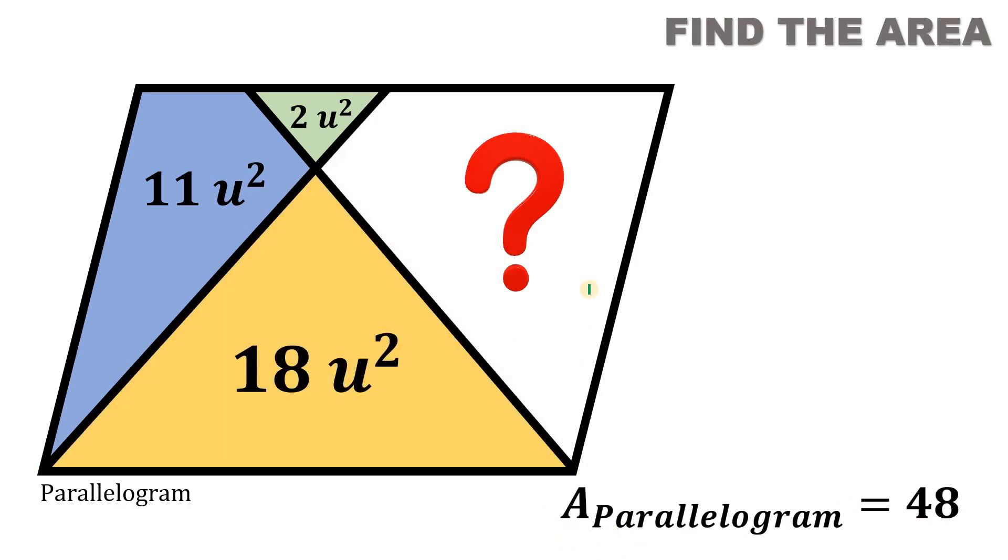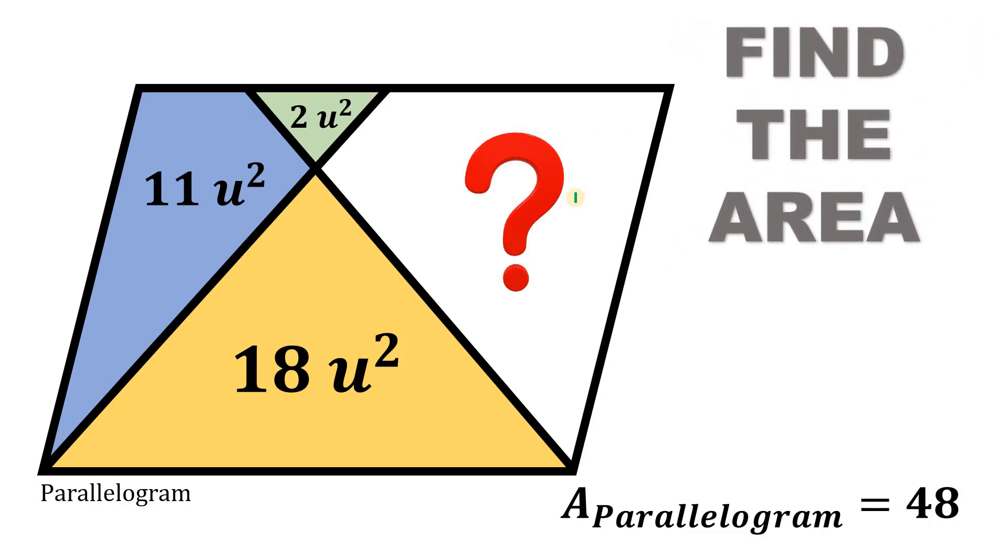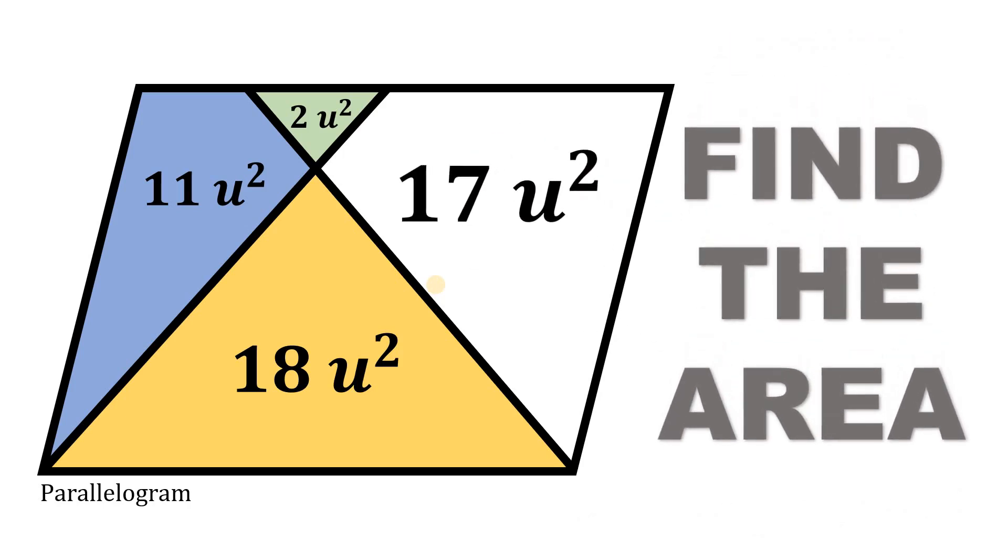So going back to our figure, the goal is to find the area of this region. And that is now easy because we know the area of the parallelogram. So parallelogram, 48, minus 2 plus 11 plus 18. 2 plus 11 plus 18 is 31. 48 minus 31 simply equals 17. And that is the area of this white region. This is our final answer to this question. The area of this white region is 17 square units.